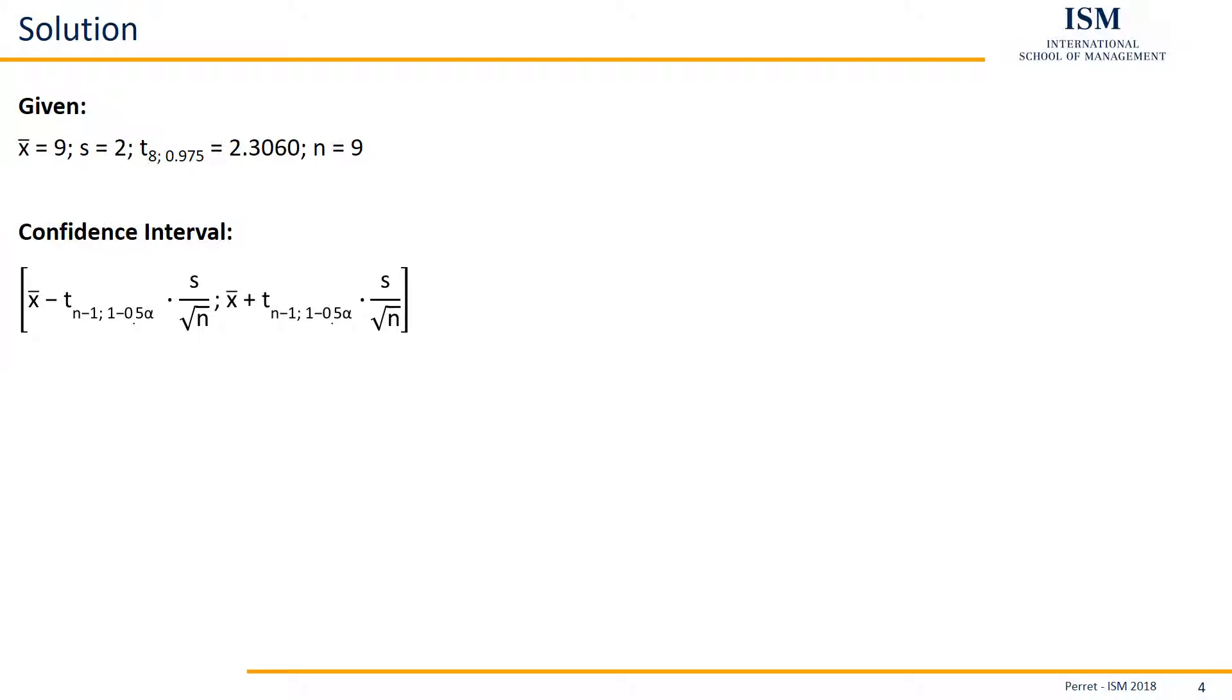And, for the upper bound, I just switch the minus with a plus. So, if I insert the values, it looks as follows. Then, I can just calculate this, giving me, as a lower bound, 7.4627, and as an upper bound, 10.5373.